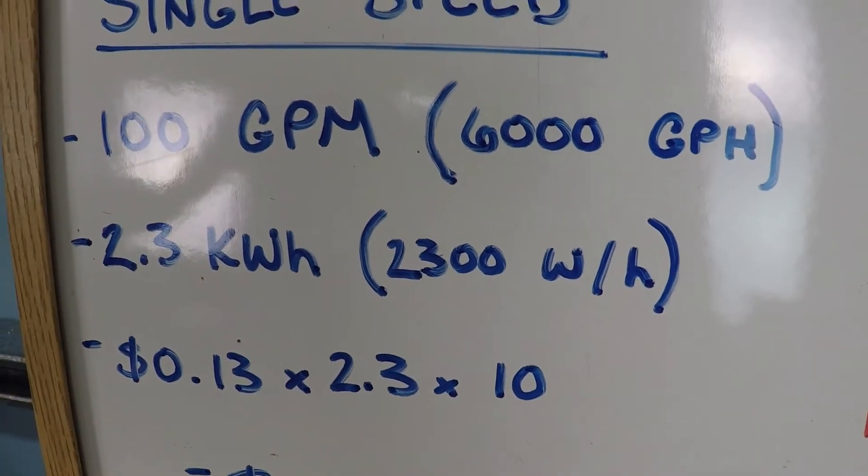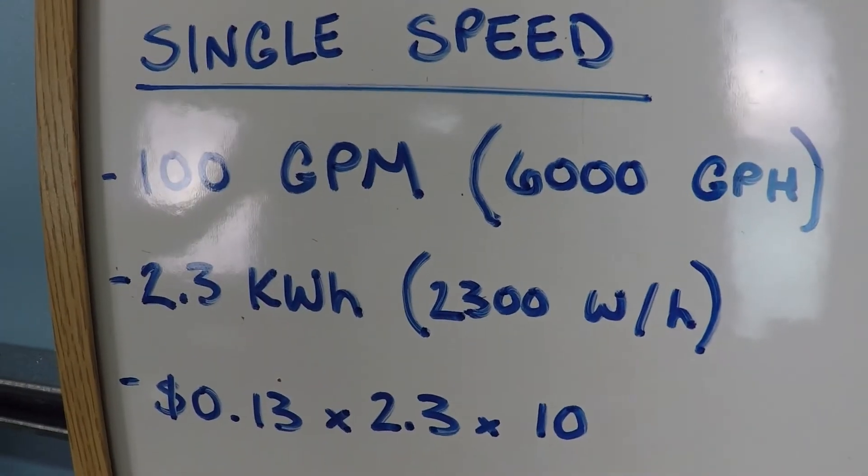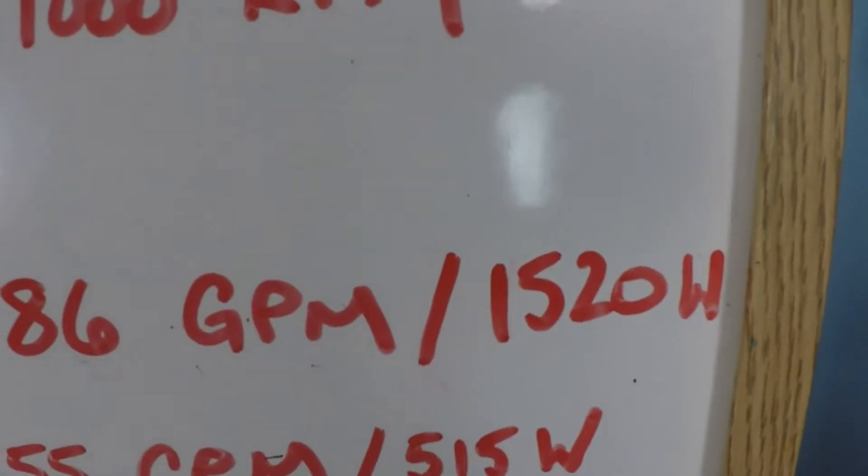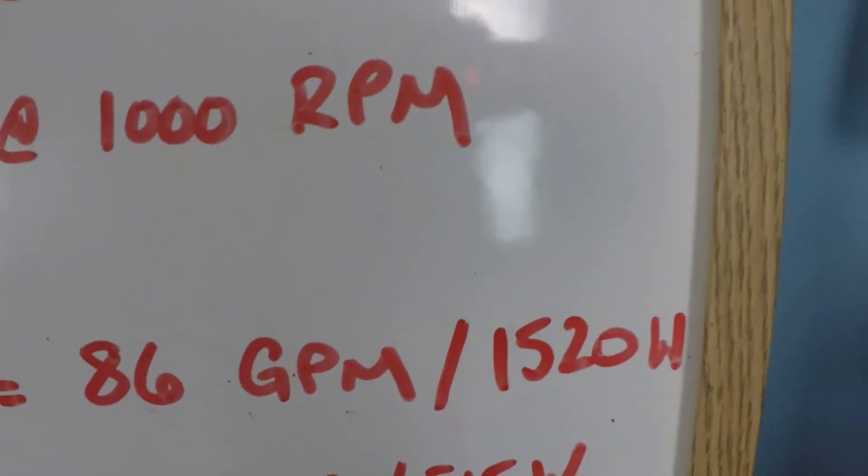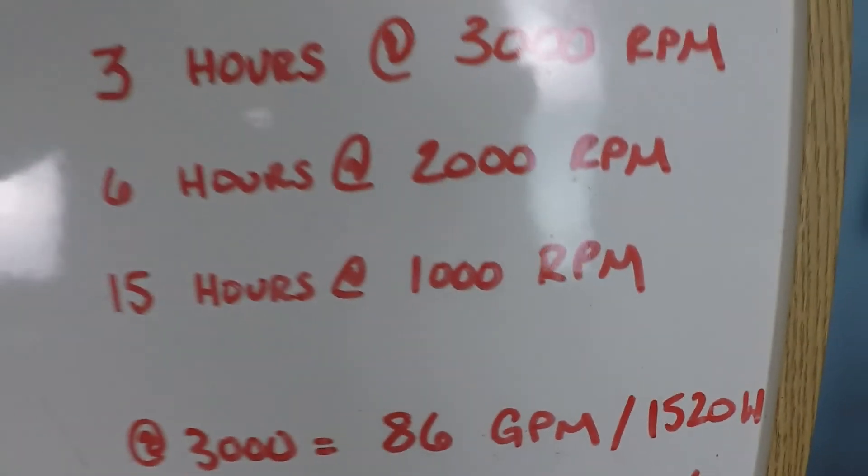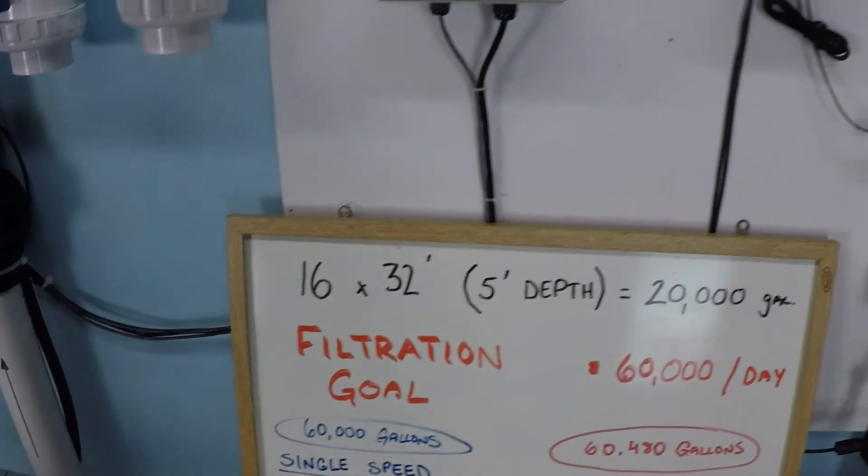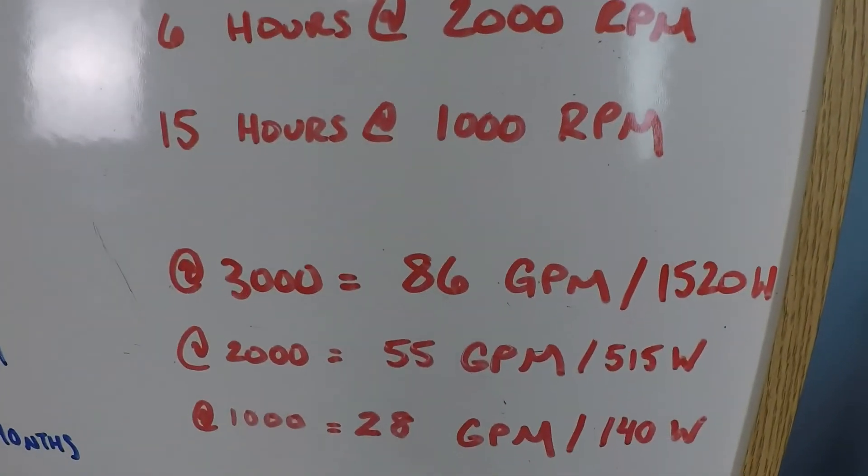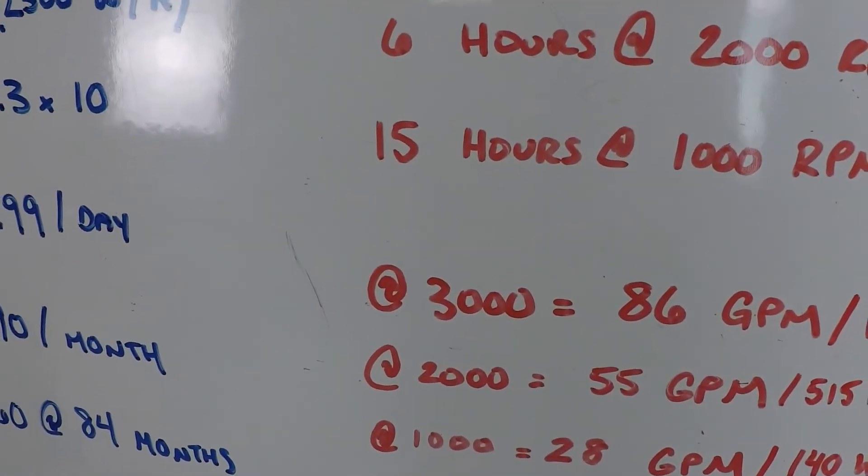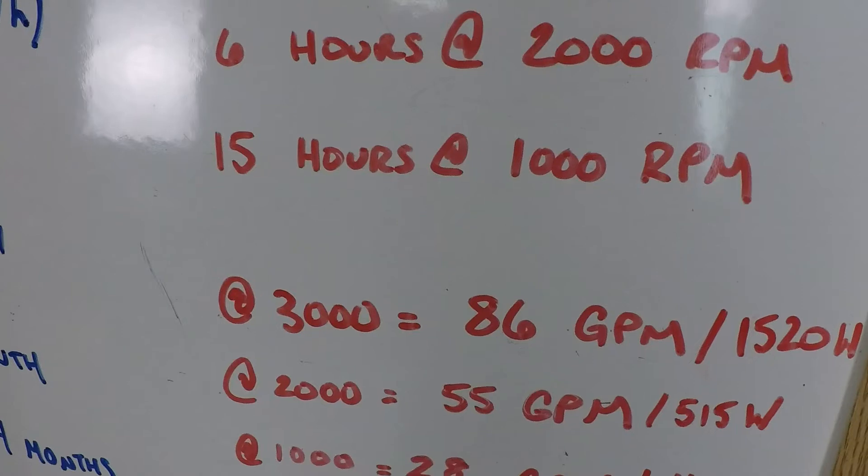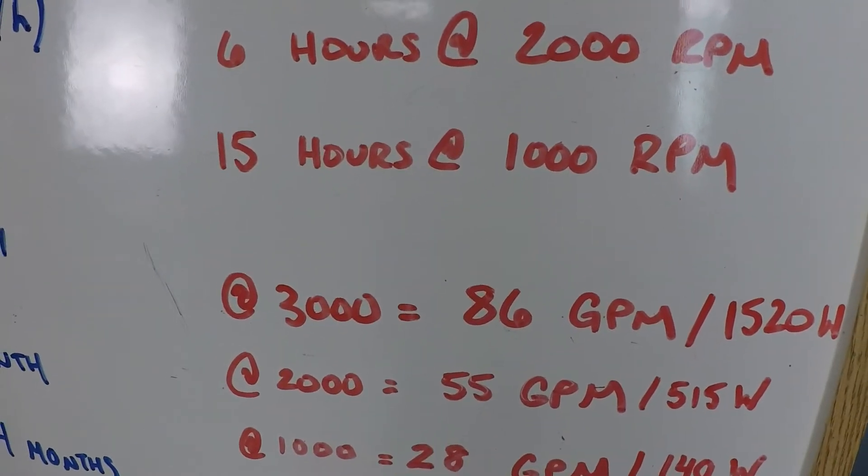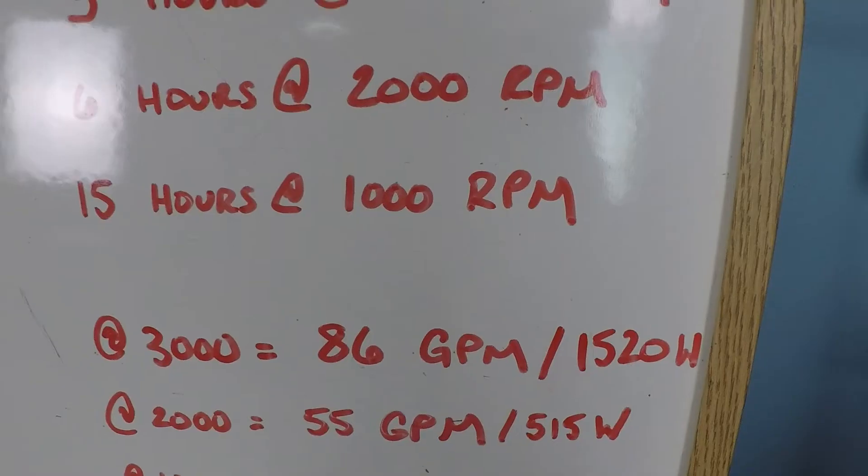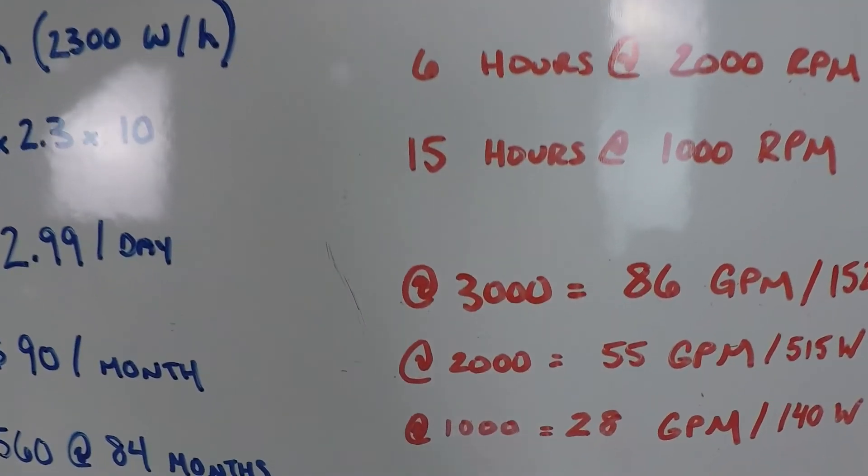So on this side, we had 2,300 watts per hour for 3,450 RPM. On this side, 1,520 watts. Our numbers were 1,530 just now, but these calculations are based on 1,520. And what that means for your flow is that for three hours every day, you're going to be getting 86 gallons per minute, and you're going to be paying 1,520 watts per hour. Now let's take a look at the slower speeds here.